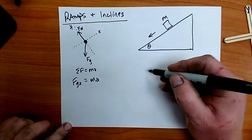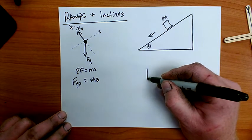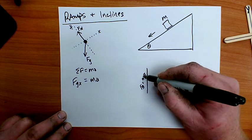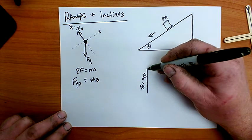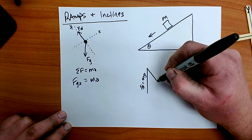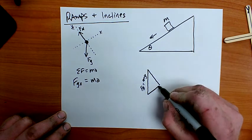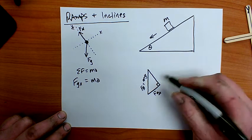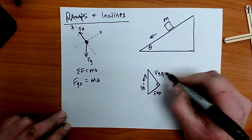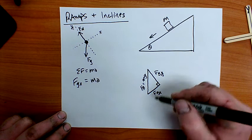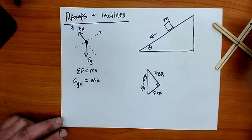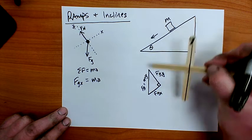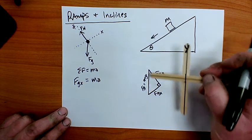Step four is to plug in numbers and solve. To find fgx, let me look just at the force of gravity. Here's the force of gravity, which equals m times g. It has a component in the y direction and a component in the x direction. Where x and y meet there's always a right angle, so this is fgx and this is fgy. Now the angle theta appears in this triangle as one of the two corners, and I need to figure out which one.